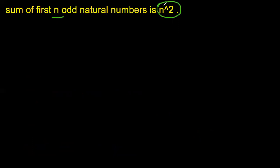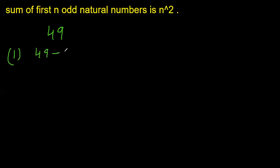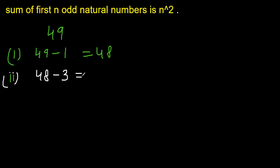Now we are going to use this statement to find the square root by the method of successive subtraction. For example, find the square root of 49. Since we were adding odd natural numbers, we will keep subtracting odd natural numbers. Step 1: 49 minus 1 equals 48. Step 2: 48 minus 3 equals 45.